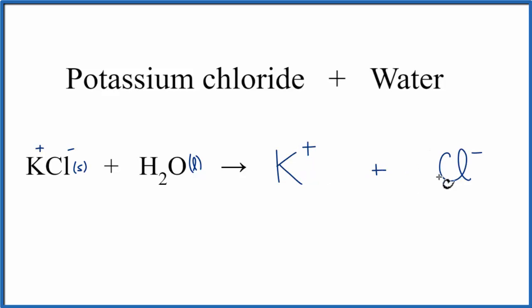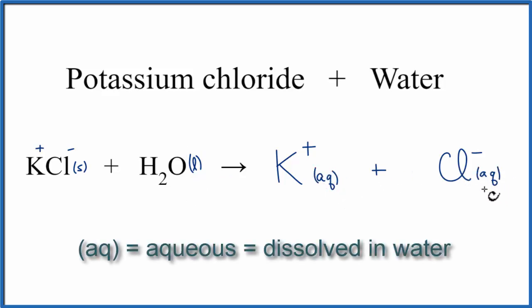Because the K plus and the Cl minus are dissolved in this water, we write AQ after each one of them. AQ means aqueous, or dissolved in water. Since we have AQ after the potassium cation and the chloride anion,